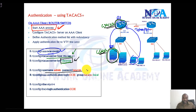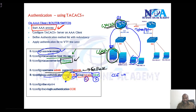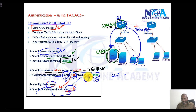We also configure a local user account as a fallback option. I want to configure AAA to use the TACACS server as the primary authentication method, and if it fails for some reason, we should be able to fall back to the local user account. We need to enable AAA for login with an authentication list named 'CCI'. The first method should be TACACS and the second method should be the local database. Then we apply this AAA authentication list on the VTY line.